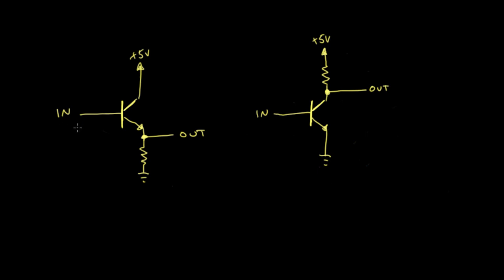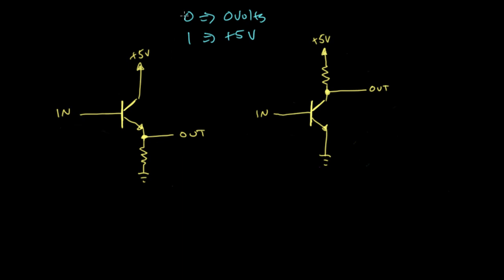We can actually start talking about 1s and 0s now, as long as we keep in mind that a 0 means 0 volts and a 1 means plus 5 volts. Our input can either be a 0 (0 volts) or a 1 (plus 5 volts), and we'll see that the output is also going to be either one of these.